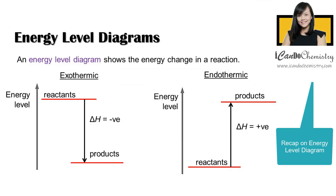Earlier in the topic we actually learned how to draw energy level diagrams, so let's have a quick recap. The energy level diagram shows the energy change in the reaction. We draw two lines to represent the energy level of the reactants and products. In an exothermic reaction, the energy level of the products is less than the energy level of the reactants, so we draw a line below to represent the lower amount of energy.